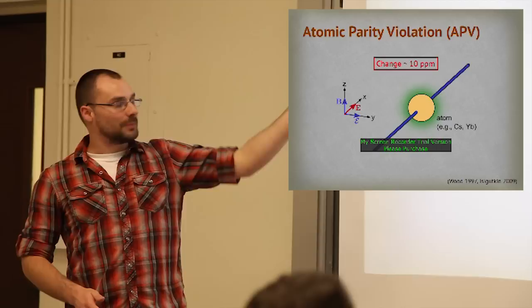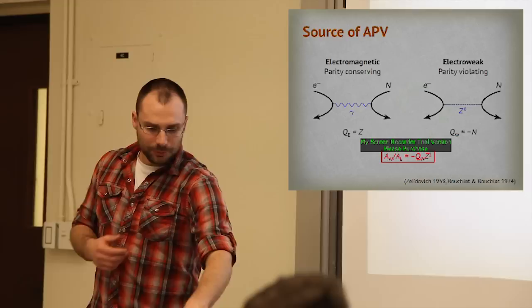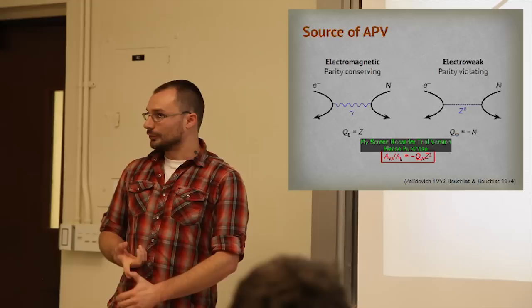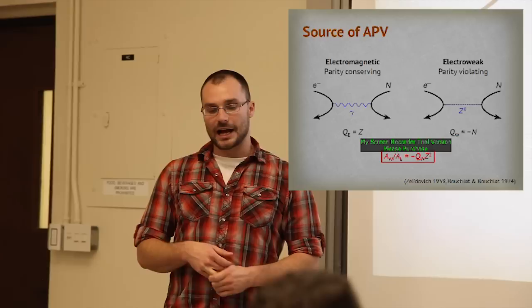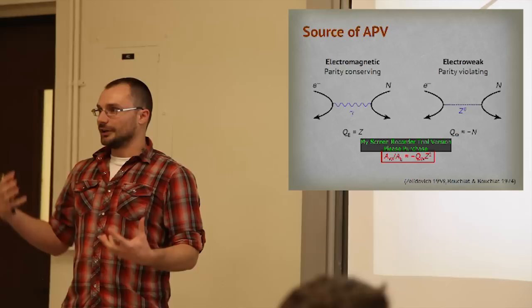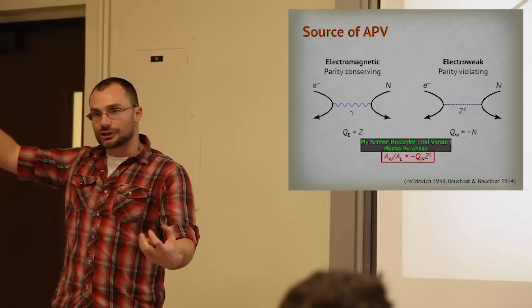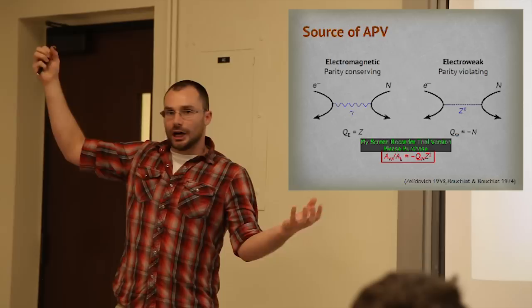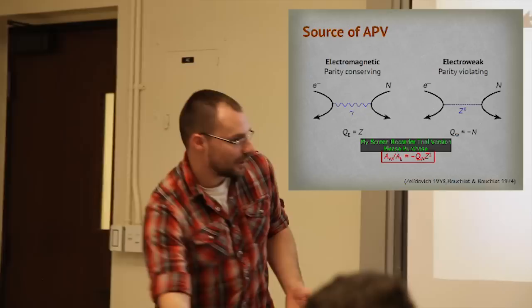Why is the universe asymmetric under spatial inversion? Why do my experiment and its mirror image give different results? The culprit is the weak interaction. There are four fundamental forces in physics: gravity, electromagnetism, the weak nuclear force, and the strong nuclear force. Of those four, the only interaction that violates parity is the weak interaction. In atoms, electrons interact with the nucleus via the weak interaction analogously to how they interact electrically. In the quantum mechanical picture, we talk about virtual particle exchange: the protons and electrons exchange virtual photons — this is the analog of the electromagnetic force.